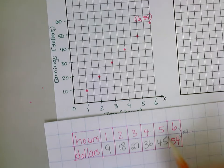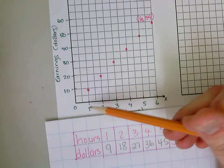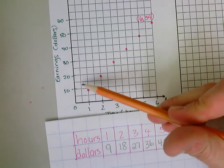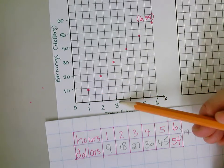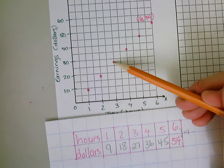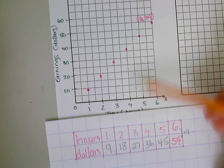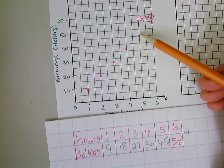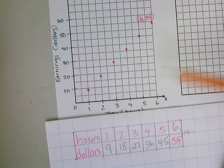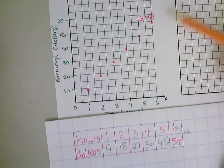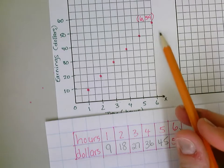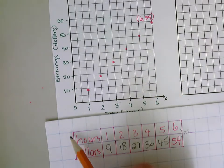Let's see if that works. One hour nine dollars, two hours eighteen dollars, three hours twenty-seven dollars, four hours thirty-six dollars, five hours forty-five dollars, and six hours fifty-four dollars. So we can graph a ratio table onto a coordinate plane.